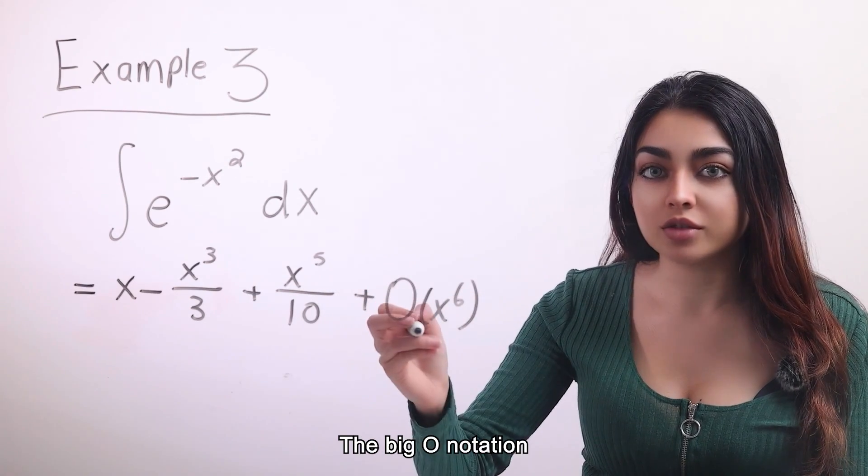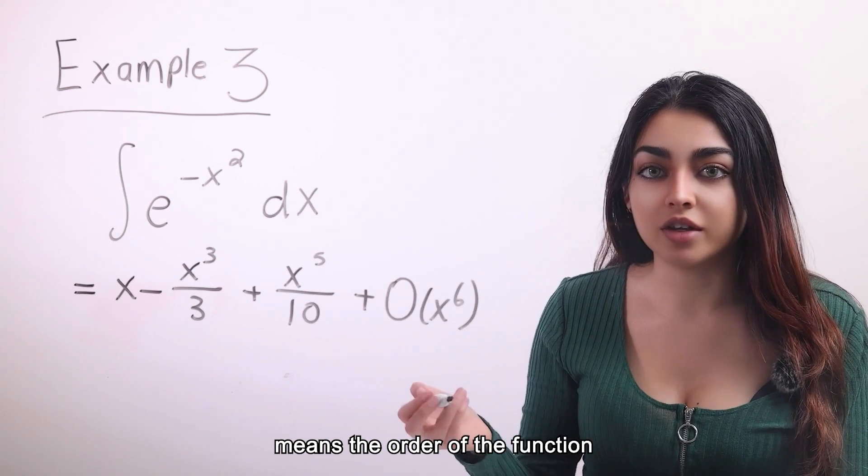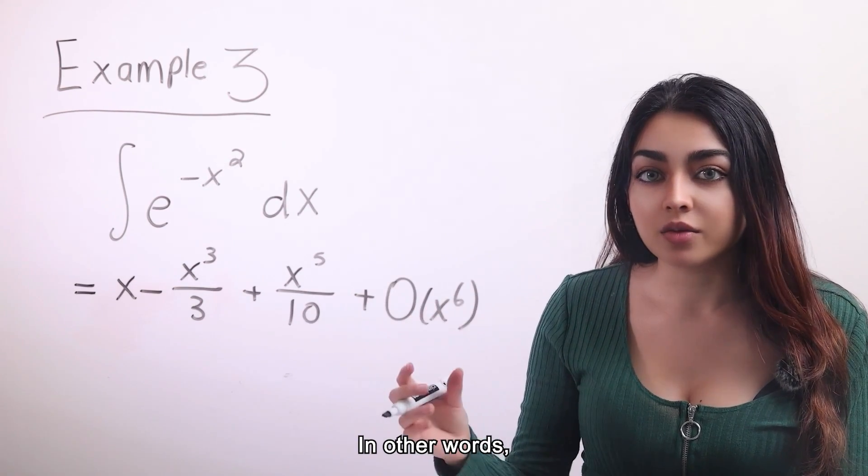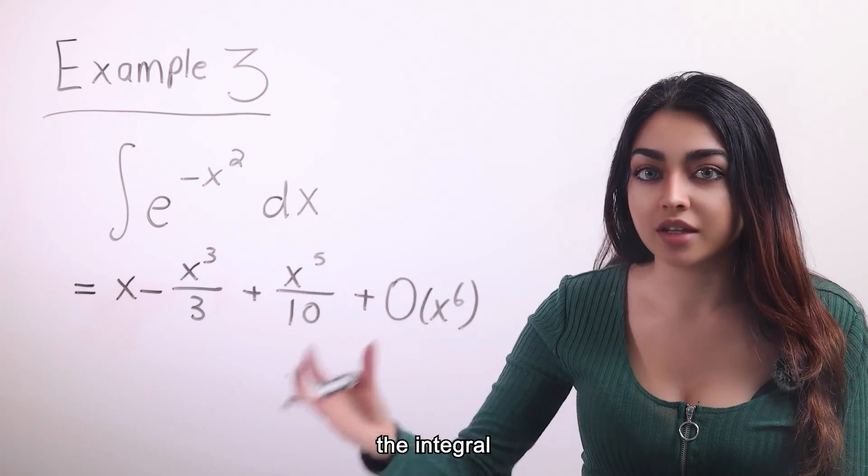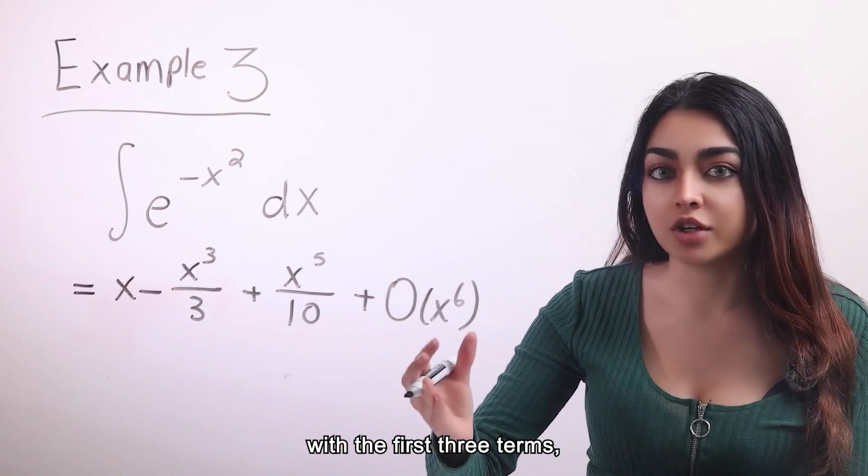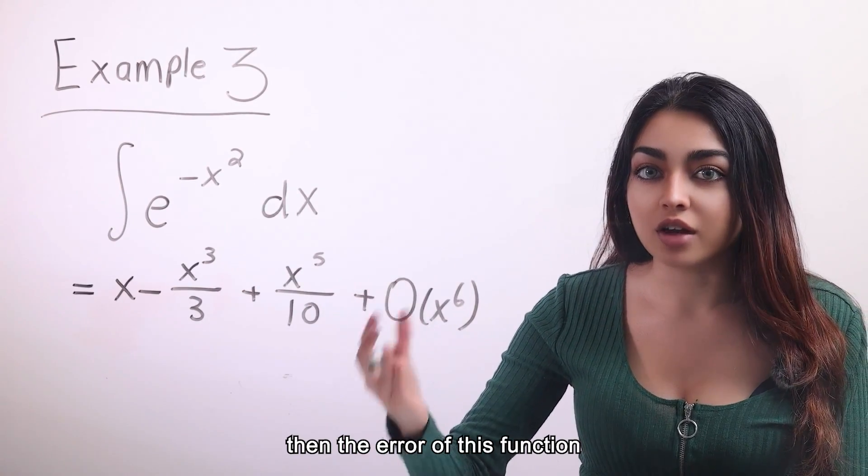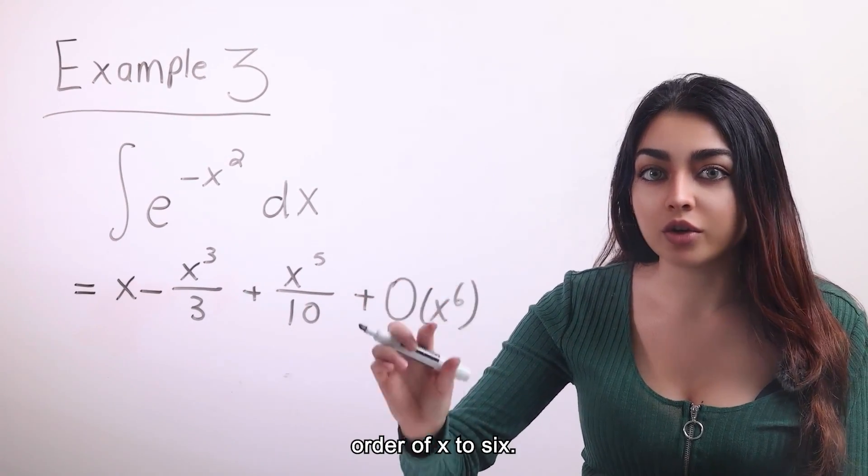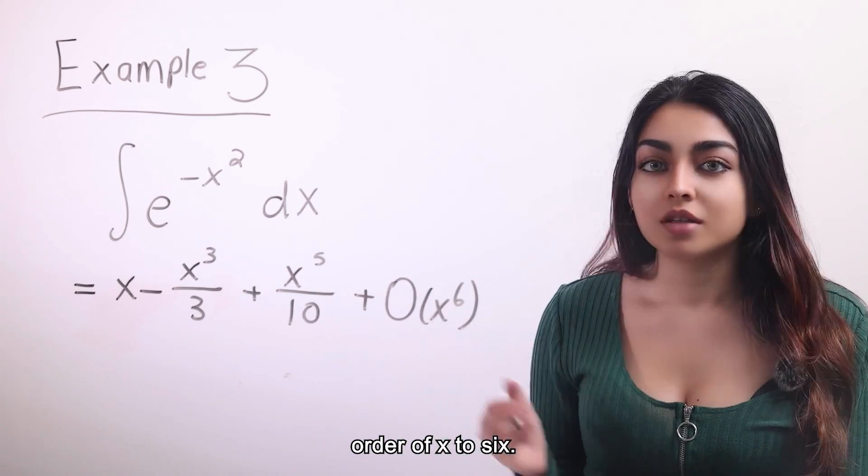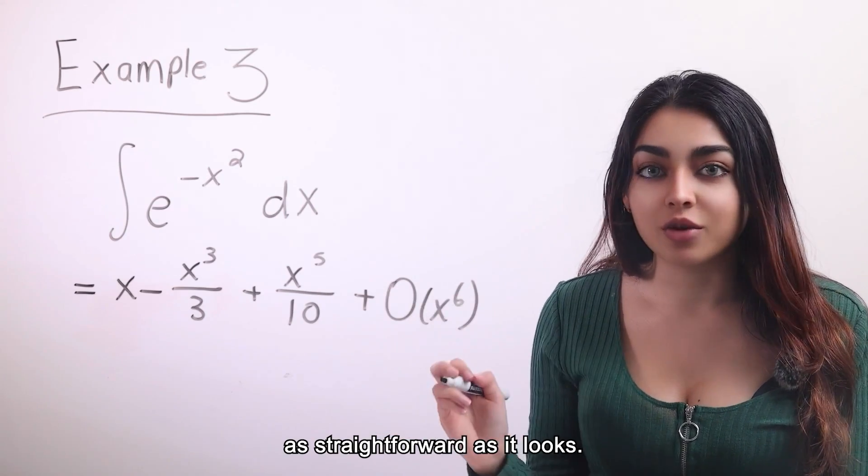The big O notation means the order of the function within parentheses. In other words, if we just approximate the integral with the first three terms, then the error of this function will be on the order of x to the sixth. So this is not as straightforward as it looks.